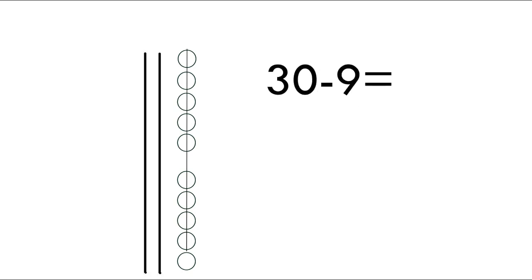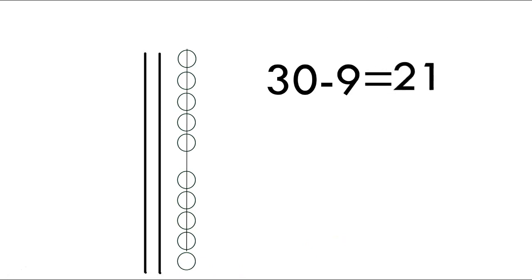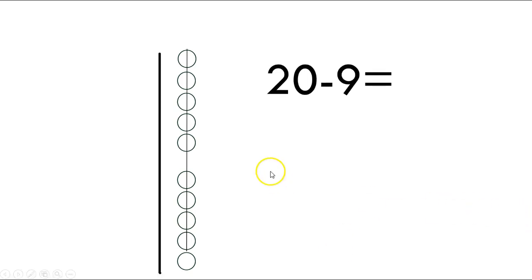How about this number sentence: 30 minus 9. I crossed my 9 off — I had 30, so 10, 20, 30 — then I crossed out my 9. How many do I have now? Let's count: 10, 20, 21. So what's my answer? 21. How about here — I'm going to cross out my 9. Now I have 20 minus 9. Let's count: 10, 11. So my answer is 11.